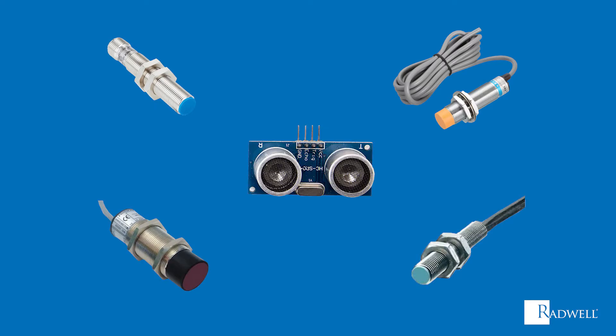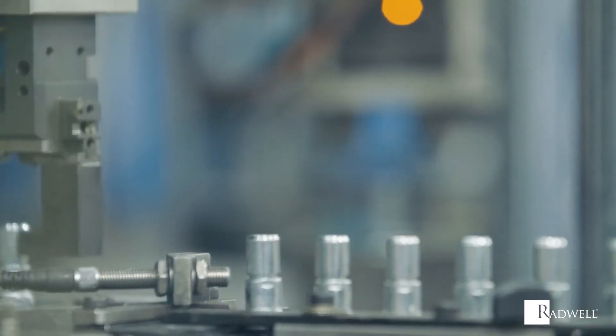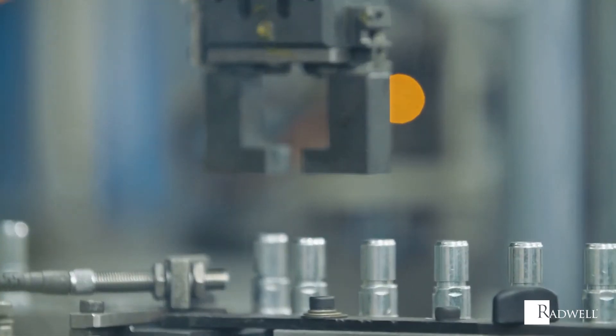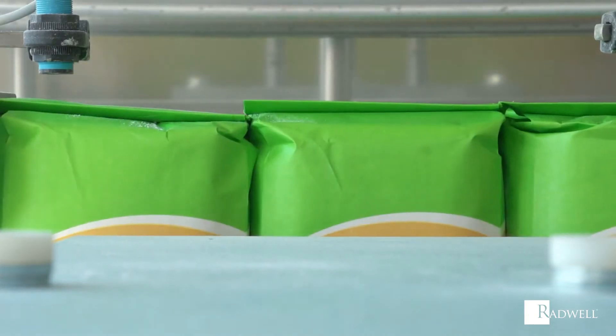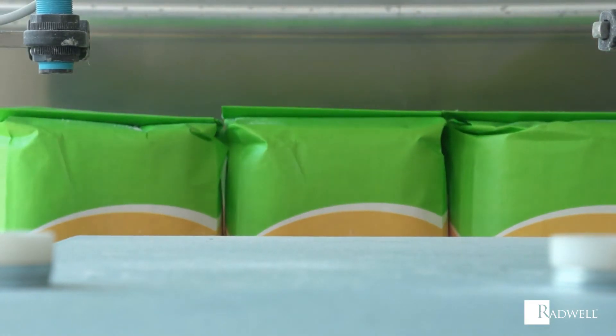Inductive proximity sensors are used to detect metal objects only. Capacitive proximity sensors are not limited to metal objects and detect through an object's electrical discharge.